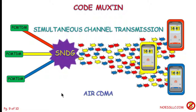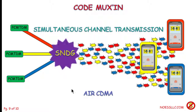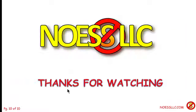Bottom line — what is multiplexing? Putting lots of things on one thing. All you have to decide is what are the 'lots of things' and what is the 'one thing,' and there you go. Thanks for watching — 10-4, roger, rubber ducky, over and out.